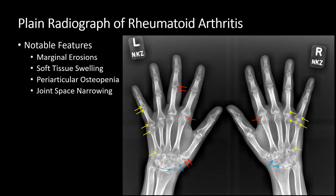Notice how the bones look more lucent right around the joints. This is present throughout both hands, but just a few arrows are shown. The blue arrows represent joint space narrowing, involving many of the carpal joints, though this is not as severe involving the joints of the hands.